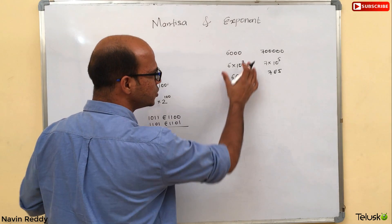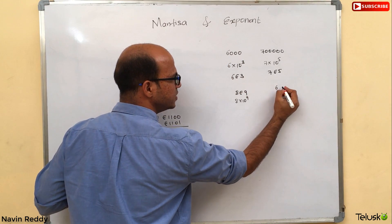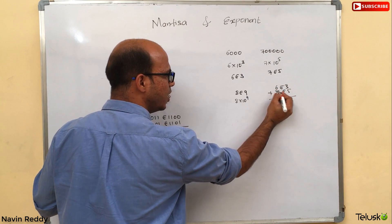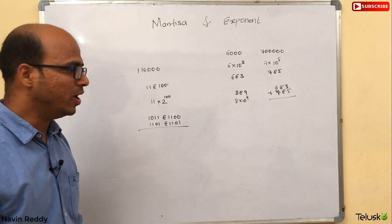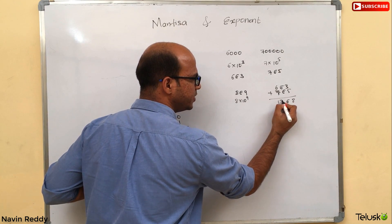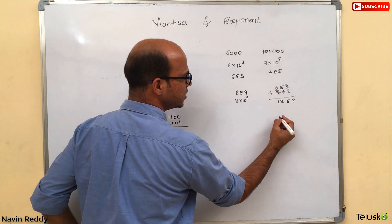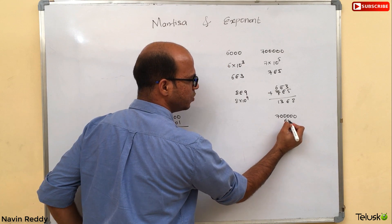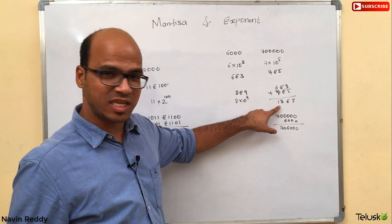Before going further, let's think about this in decimal. Can we add 6E3 and 7E5? If you simply say 3 plus 5 is 8 and 6 plus 7 is 13, giving 13E8 — that is not correct. Because 7E5 is 700,000 and 6E3 is 6,000, so the actual addition is 706,000, which is not the same as 13E8.